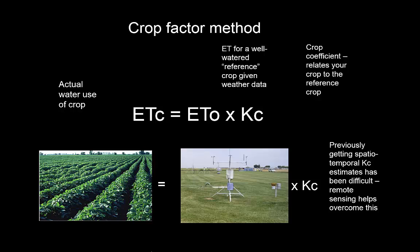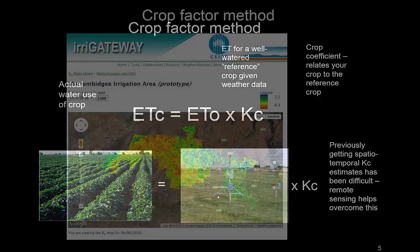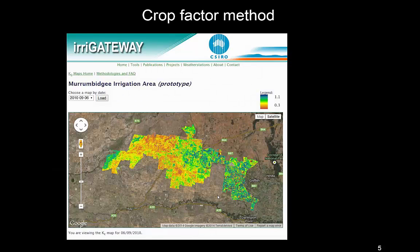The crop factor method says that the actual water use of a crop is the product of a reference evapotranspiration rate — typically expressed as the evapotranspiration from a short, well-watered lawn — times some crop factor. The crop factor accounts for the difference in plant function between the lawn and the crop. Previously this was done with the FAO crop factor method using lookup tables for different times of year and crop stages, applied to a whole field. The disadvantage is that it's inaccurate and provides no spatial information within a paddock about areas of lesser or greater growth and water use.